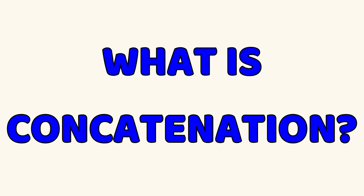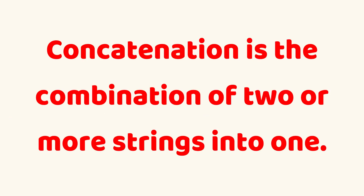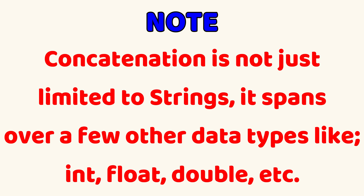What is concatenation? Concatenation simply means a combination of two or more strings into one. It is worthy to note that concatenation is not just limited to strings — it spans over a few other data types like int, long, double, etc. Now, let's go ahead to see how concatenation works in Java.